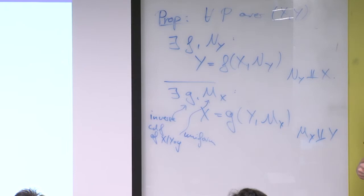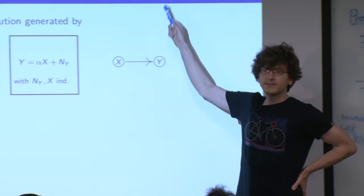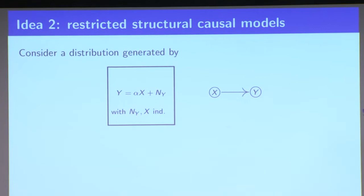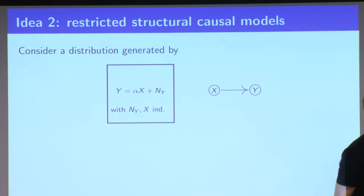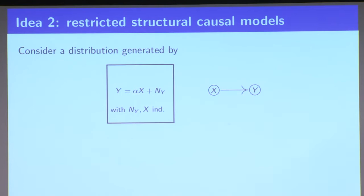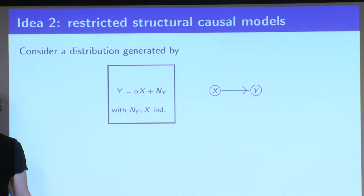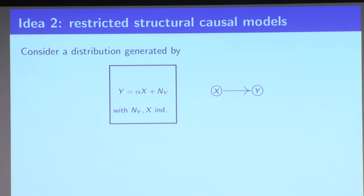So this is the negative result, and now we see a positive result. The second idea in causal discovery — what we sometimes call restricted structural causal models — says: if we assume the functions appearing in our structural causal models are simple, have a simple form, then something is possible. For example, assume you have a linear model: Y is a linear function of X plus some noise, and the noise and input are independent.